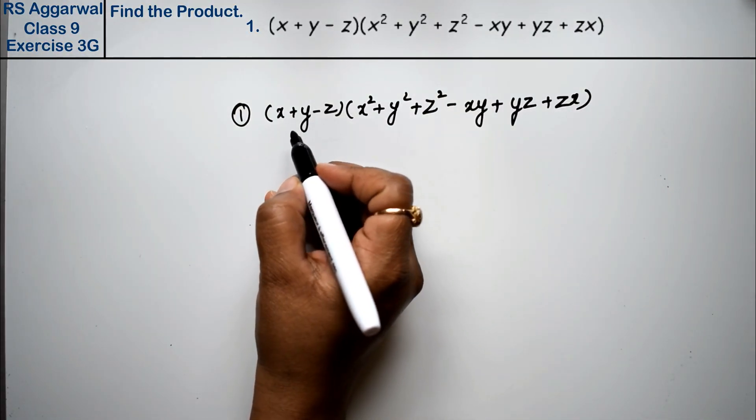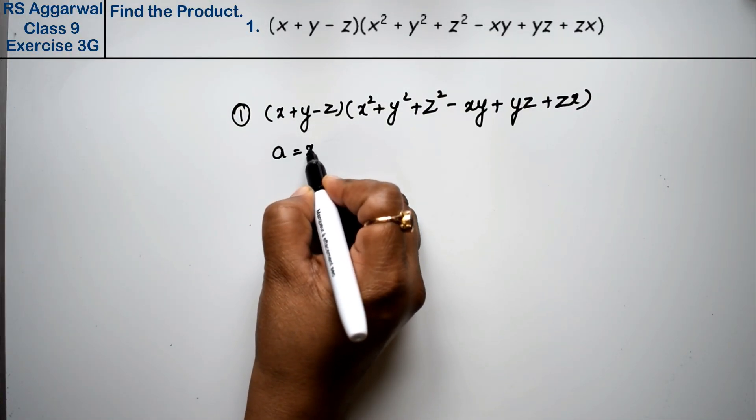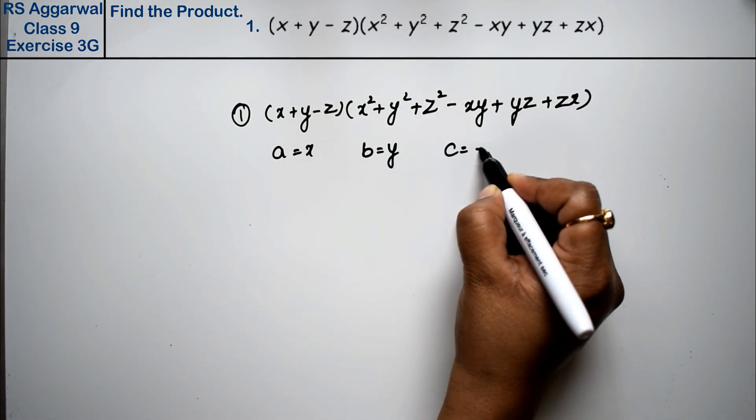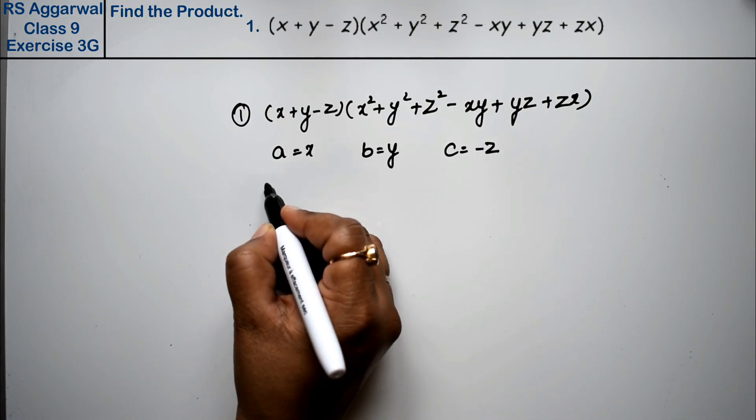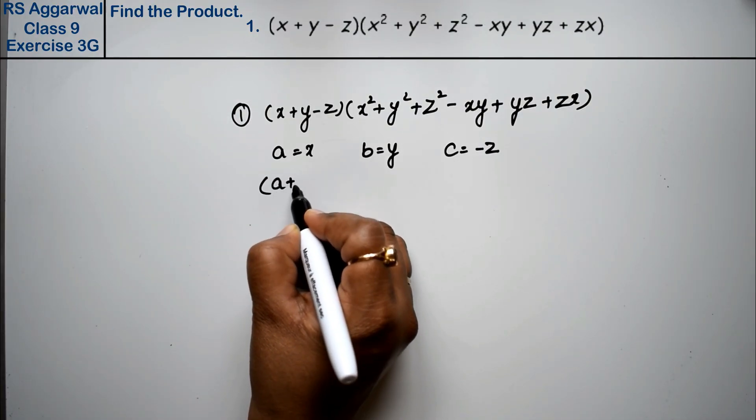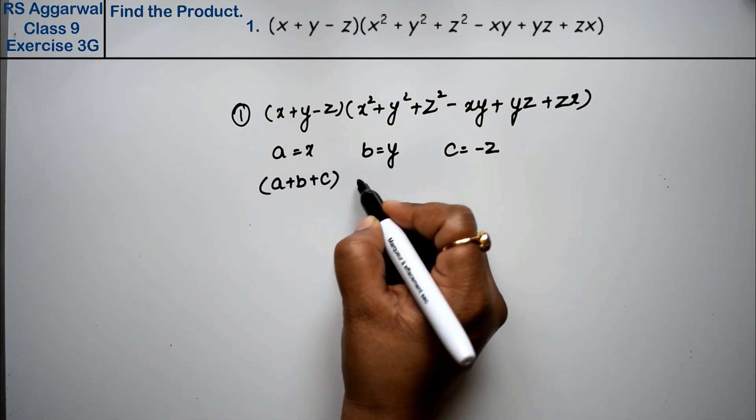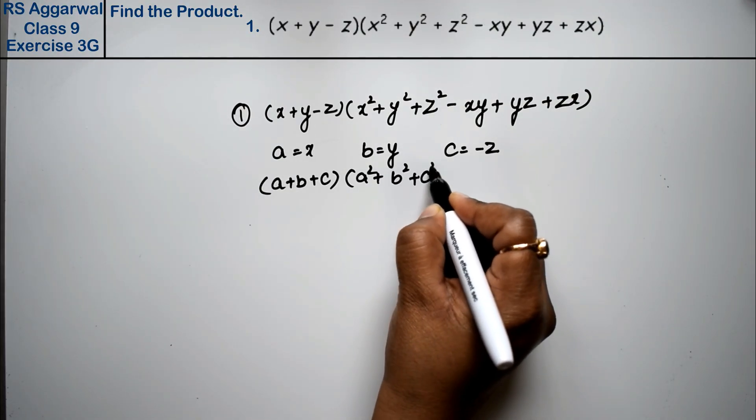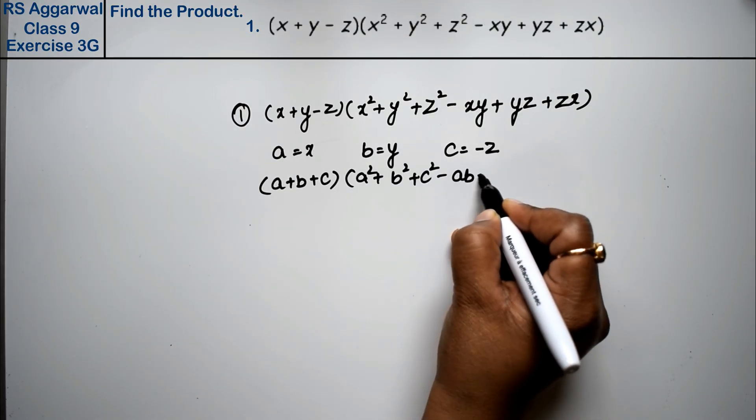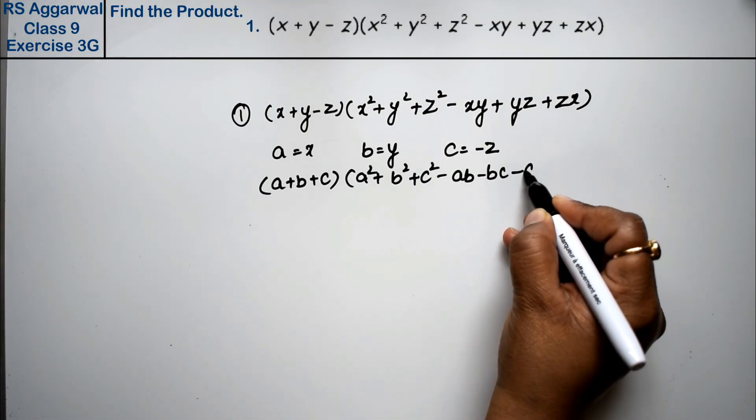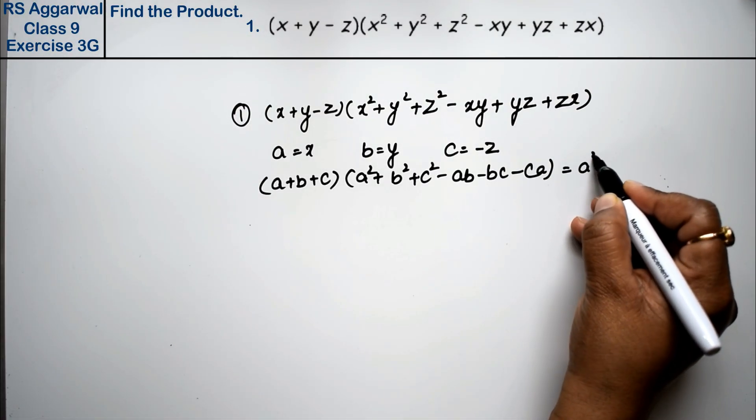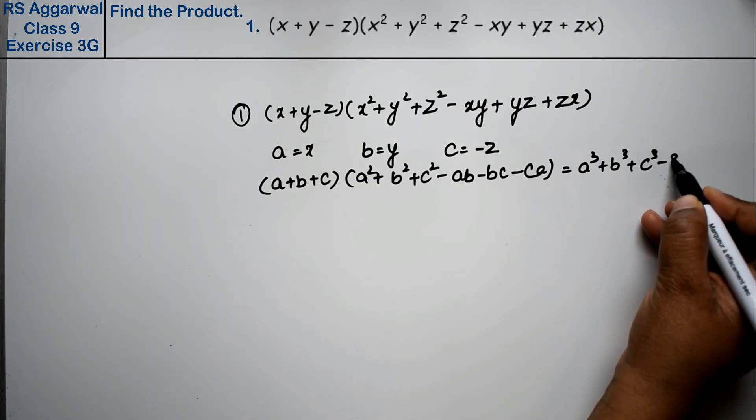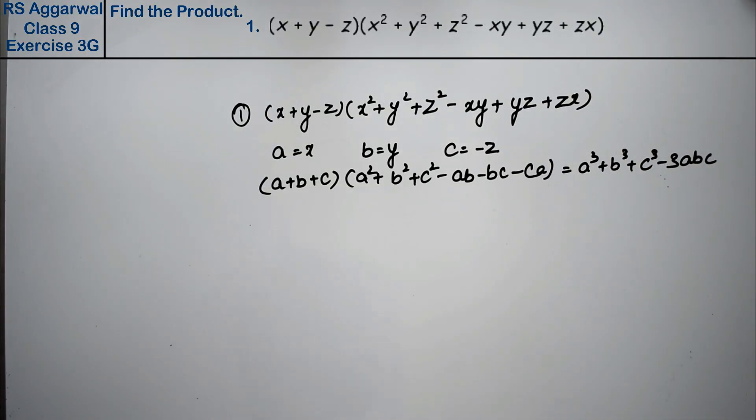Here friends, we assume a as x, b as y, and c as minus z. Why are we taking it? Because our formula is (a + b + c)(a² + b² + c² - ab - bc - ca) equals to a³ + b³ + c³ - 3abc.